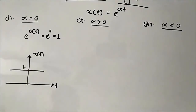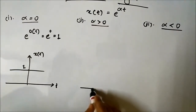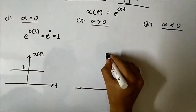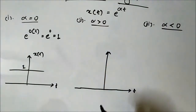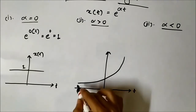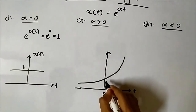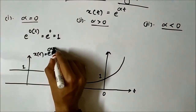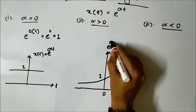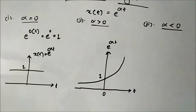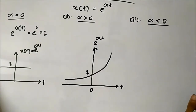For alpha greater than zero, the waveform will be an exponentially increasing signal — as time progresses, the amplitude of the signal will increase. At t equals zero the value will be one. This is x(t) for alpha greater than zero: an exponentially increasing signal, with amplitude equal to one at t equals zero.